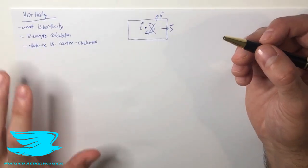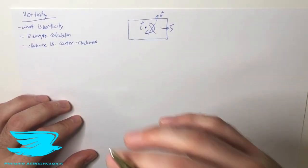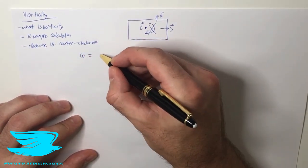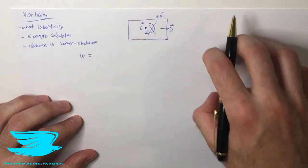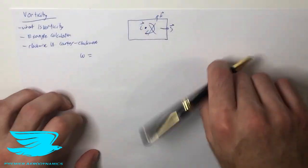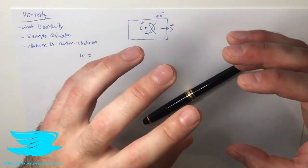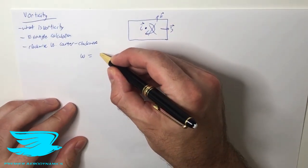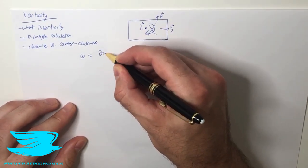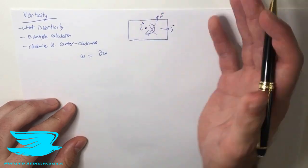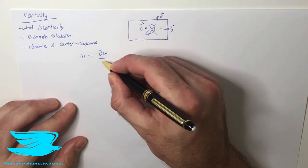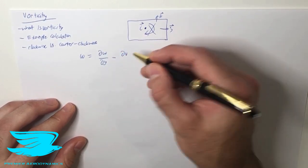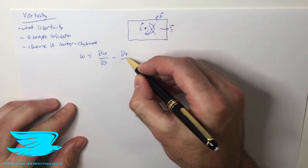So how do we calculate vorticity? What is the equation for it? Vorticity, which is denoted by omega usually, is divided into three main components for the I, J, and K directions — the rotation in the I direction, the rotation in the J direction, and the rotation in the K direction. For the I direction, we have the change of the velocity in the K direction divided by the distance this occurs over, minus the change in the velocity in the J direction divided by the distance this occurs over.